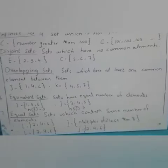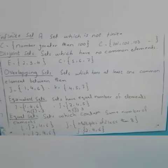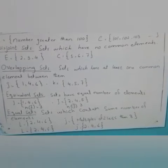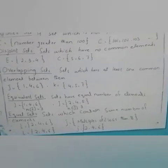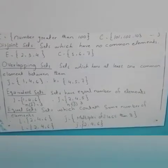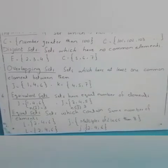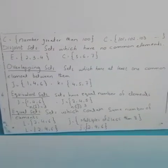Equal sets. Sets which contain same elements. L is equal to 2, 4, 6. And J is equal to multiples of 2 less than 8. When we write set J in tabular form, its elements will be 2, 4, and 6. Both sets have the same elements. That's why set L and J are equal sets.